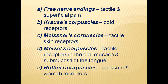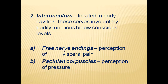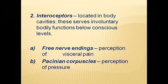The second type is interoceptors, located inside the body; they serve involuntary body functions below the conscious level, subconsciously receiving pain information from inside the body. These include free nerve endings (receiving pain from visceral body parts) and Pacinian corpuscles (receiving pressure of internal body parts).